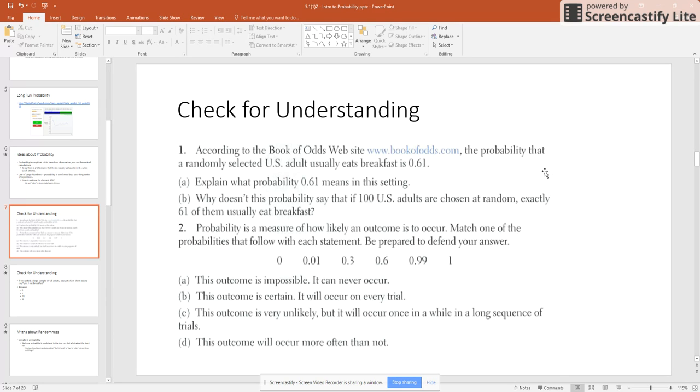Part C says the outcome is very unlikely, but it will occur once in a while in a long sequence of trials. That means I need a really small probability here because it's not very likely. But it can occur, so it's not zero. And if I do bunches and bunches of trials and repetitions, I eventually might have this happen.